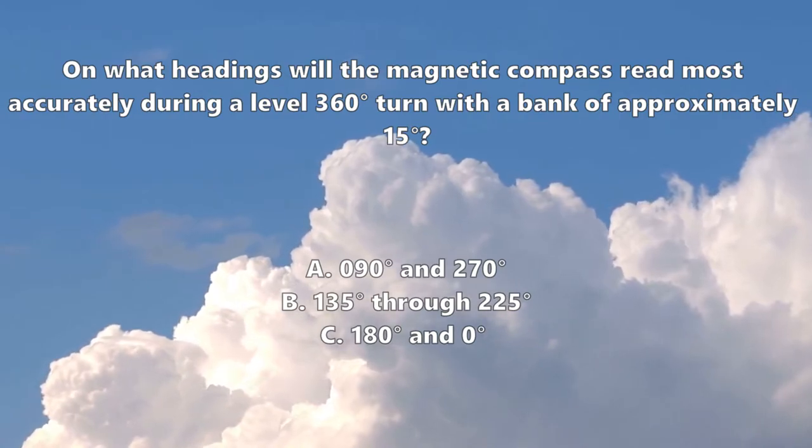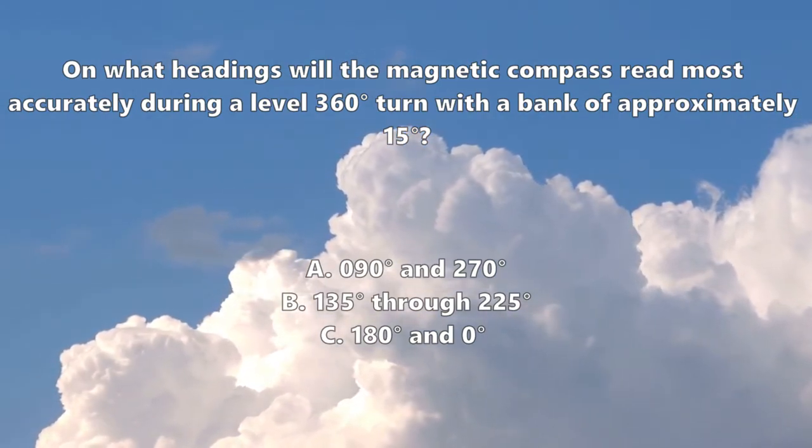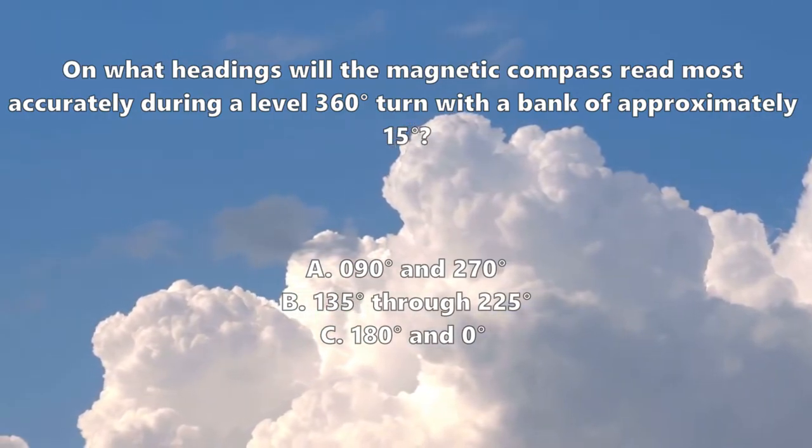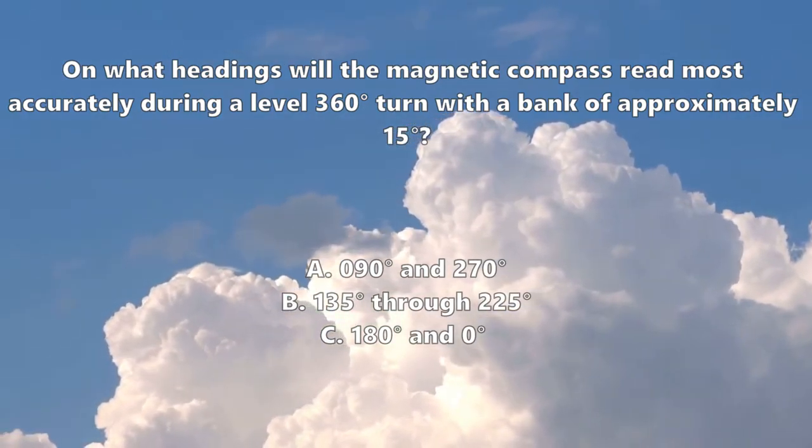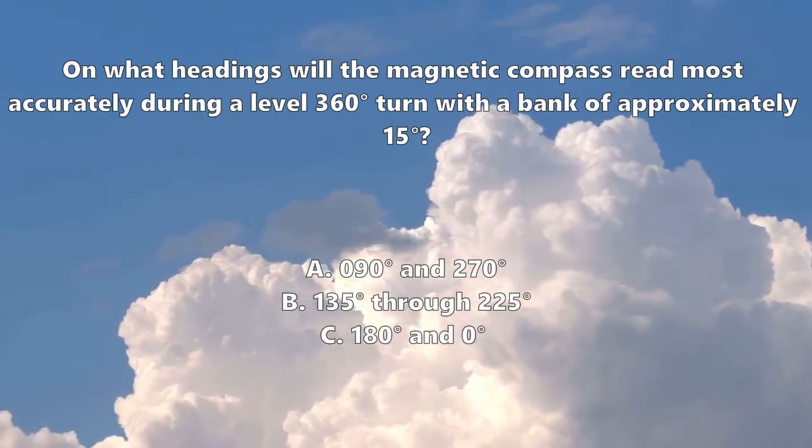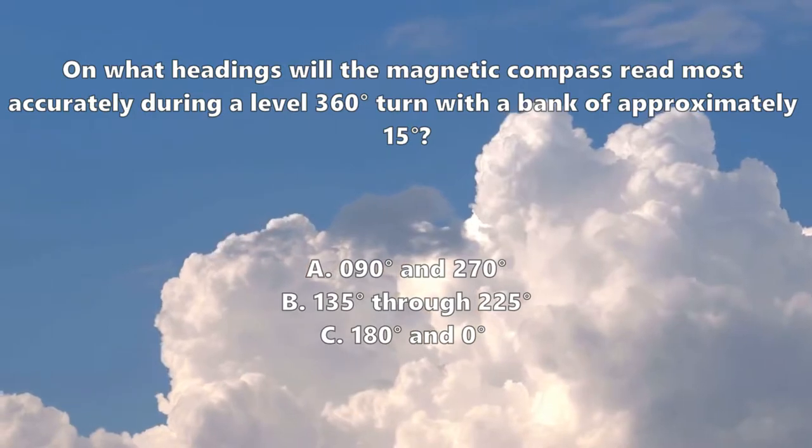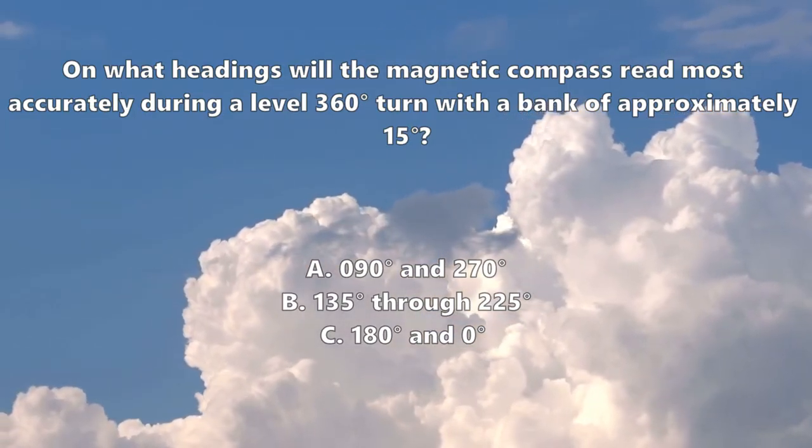On what headings will the magnetic compass read the most accurately during a level 360 degree turn with a bank of approximately 15 degrees? A: 090 degrees and 270 degrees, B: 135 degrees through 225 degrees, or C: 180 degrees and 0 degrees.